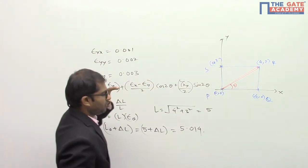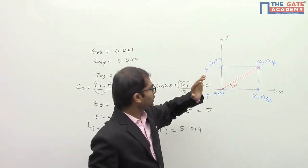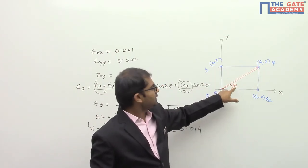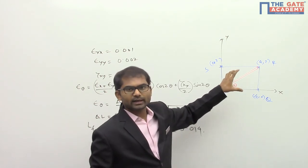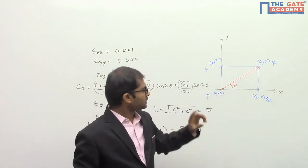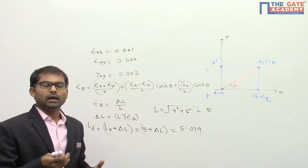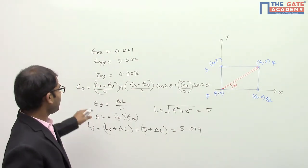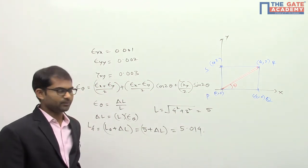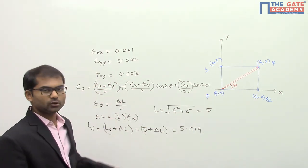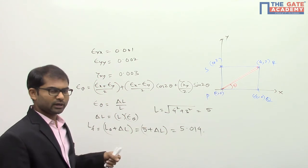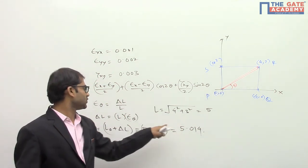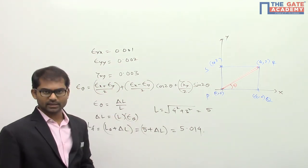To understand epsilon_theta conceptually: epsilon_xx means you take a small line along the x-direction and find the change in length divided by original length of that line. Similarly, epsilon_theta means you take a very small line at an angle theta and find the normal strain of that particular line. In this question, they ask for the final length of the deformed diagonal, so we find the strain using the epsilon_theta formula and then compute the final length. The answer is 5.014.